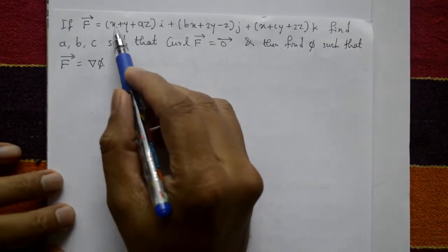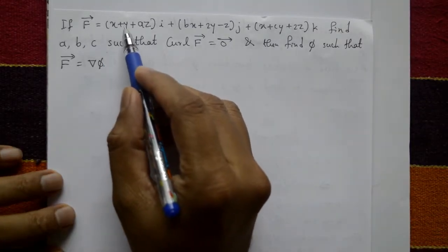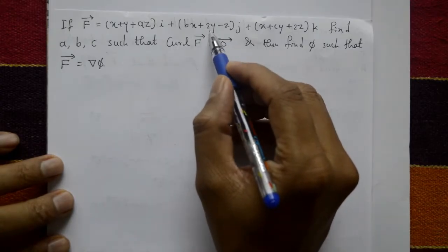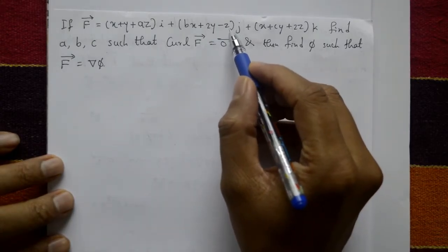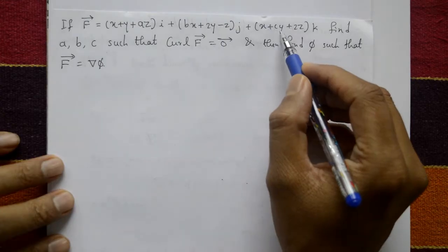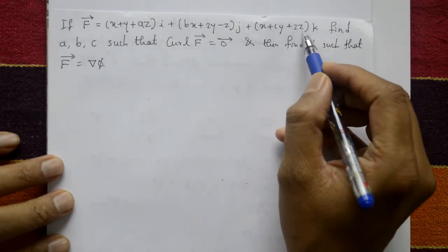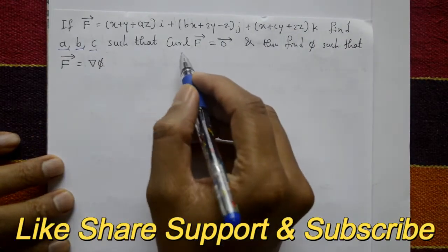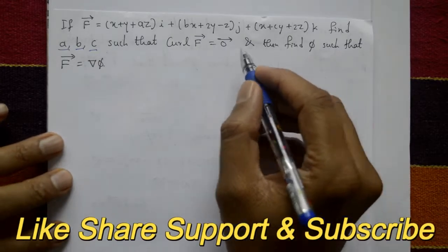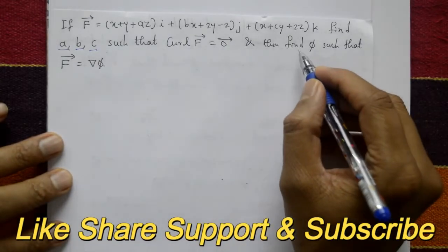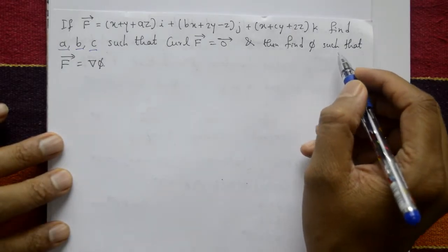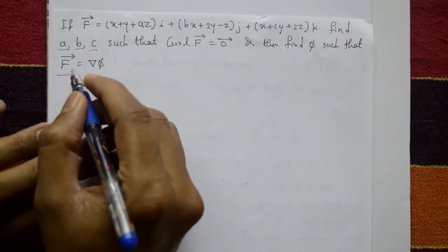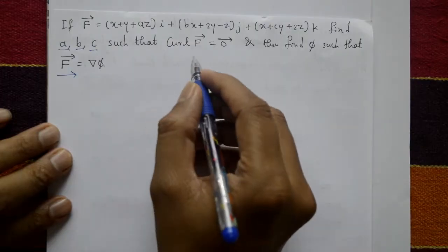If F is equal to (x + y + az)i + (bx + 2y - z)j + (x + cy + 2z)k, find a, b, c such that curl F equals zero, meaning F is irrotational, and then find phi such that F equals del phi.